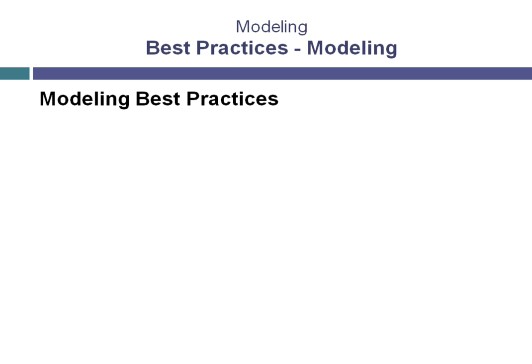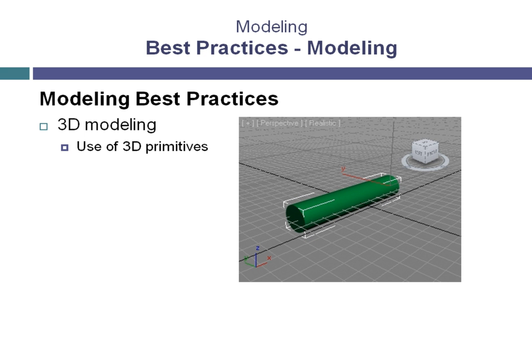Best practices are not limited to working with shape objects when modeling. 3D modeling also has quite a few best practices, and depending on who you talk to, you will find different best practices throughout different industries using the program. One best practice is to start using 3D primitives as a basis for constructing models. 3D primitives provide a very flexible means of building complex objects more simply, while also giving you the ability to modify those objects after they are created.